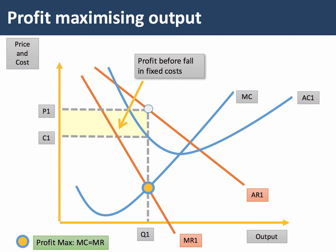This first diagram shows a profit-maximizing position for a firm with a downward-sloping demand curve. Profit-maximizing output is at Q1, where MC meets MR. That allows the firm to charge price P1, with a unit cost of C1, so the yellow area shows the supernormal profit before any fall in fixed costs.